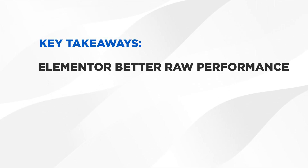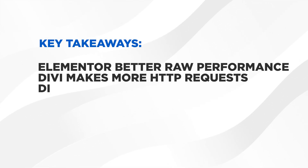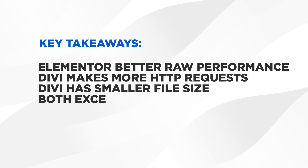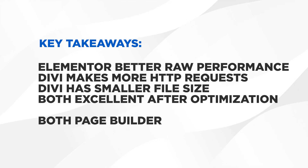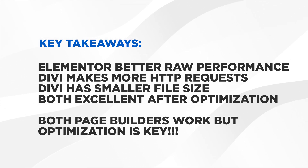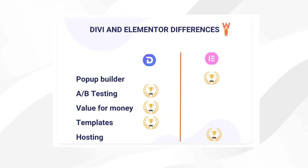Let's recap what we've learned about Divi vs. Elementor performance in 2025. Here are the key takeaways: Elementor edges out slightly in raw performance; Divi makes more HTTP requests but has a smaller file size; both builders can achieve excellent speed with proper optimization. But here's the most important takeaway — the page builder you choose isn't as crucial as how you optimize it. Both Divi and Elementor can achieve blazingly fast loading times when properly optimized with WP Rocket. Your choice should ultimately depend on your specific project needs, design preferences, budget, and your team's expertise — not performance differences, since both can score in the high 90s on PageSpeed Insights.